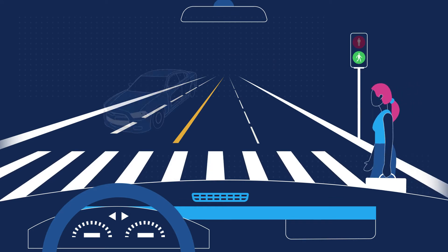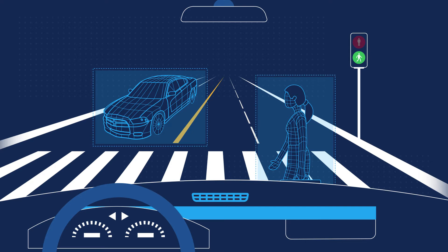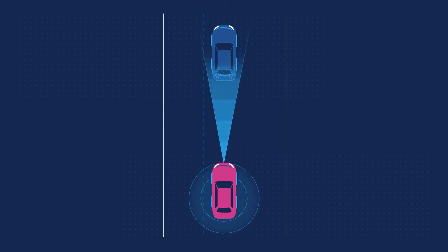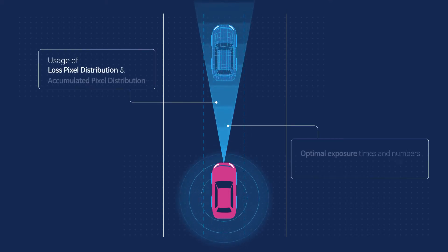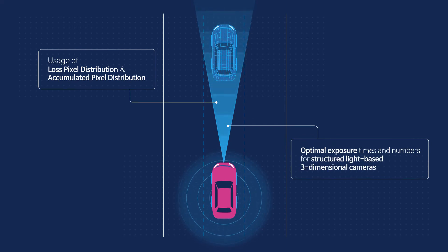It can distinguish and analyze in real-time the brightness as well as exposure times of a pixel. Vehicles equipped with such structured light-based autonomous driving features use lost pixel distribution and accumulated pixel distribution to determine the most optimal exposure times for three-dimensional cameras.